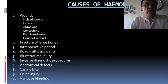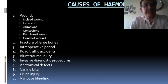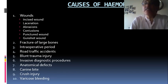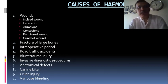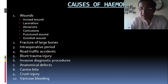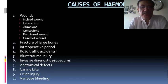Blunt trauma injury to the liver, spleen, or abdominal organs may cause hemorrhage. Invasive diagnostic procedures may also lead to hemorrhage. Anatomical defects can cause crush injury and varicose bleeding, such as esophageal and oesophageal varices.